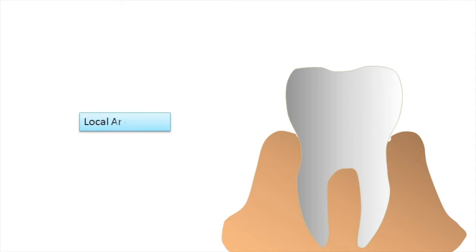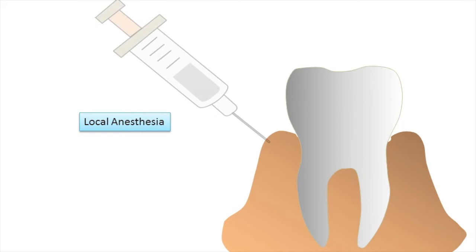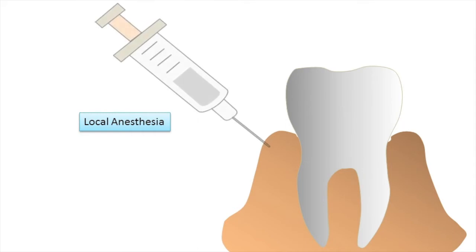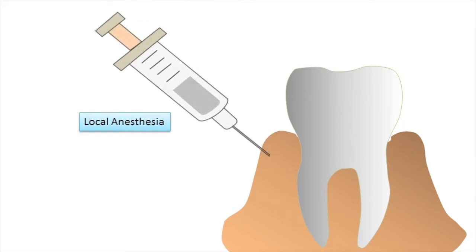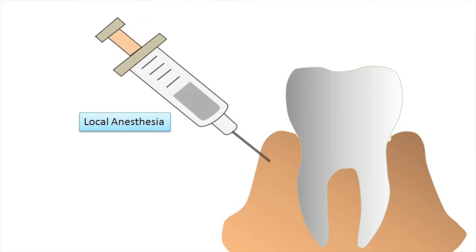The first preliminary step is local anesthesia, which is preferred in most patients as it reduces apprehension and salivation. Administering local anesthesia makes the patient relaxed and comfortable, thus contributing to better operative dentistry, especially while placing bonded restorations.